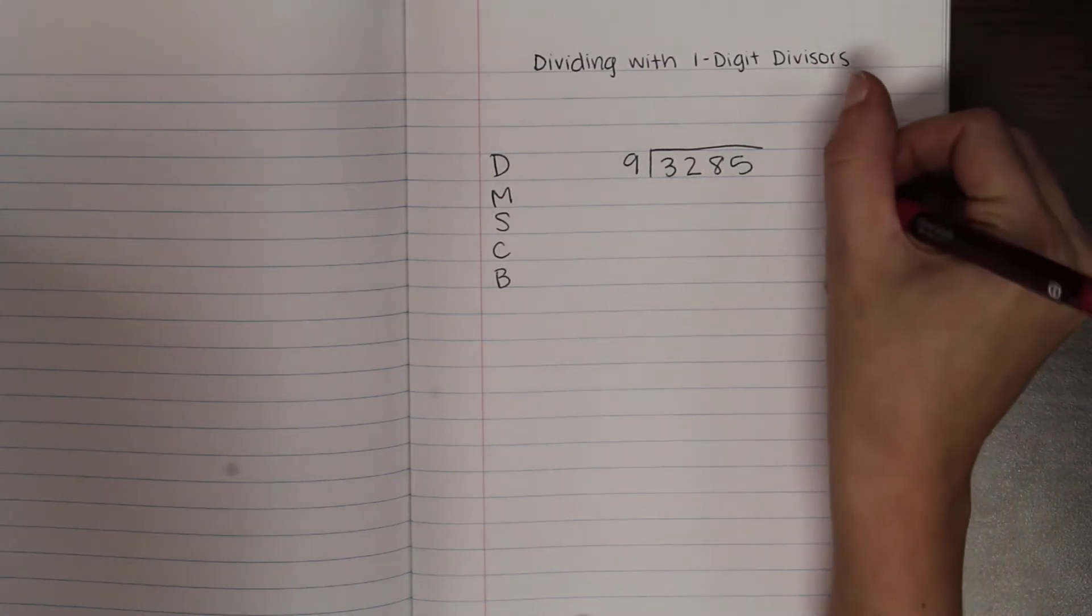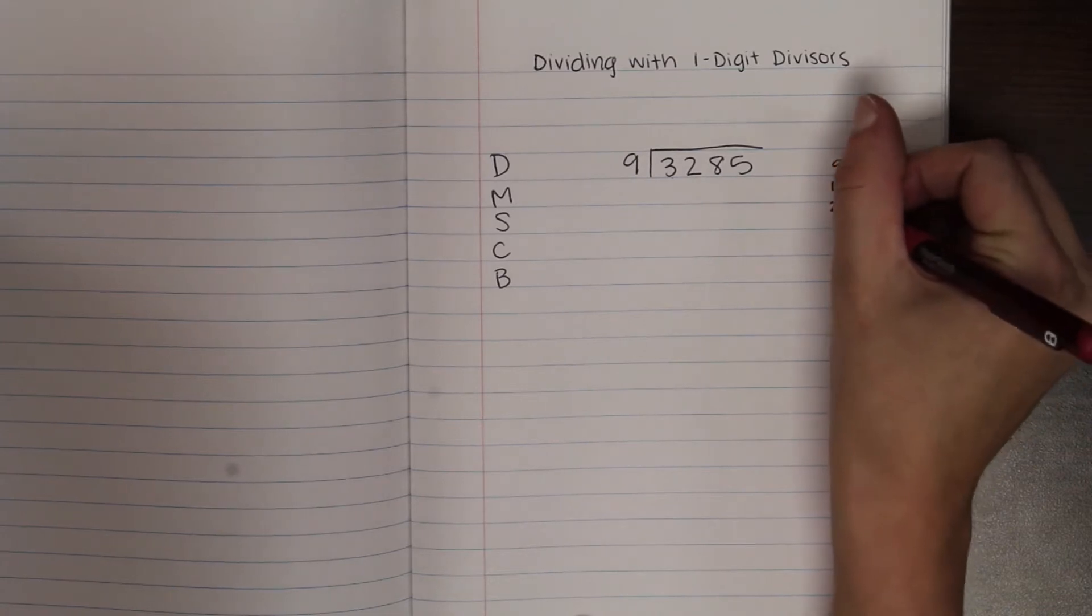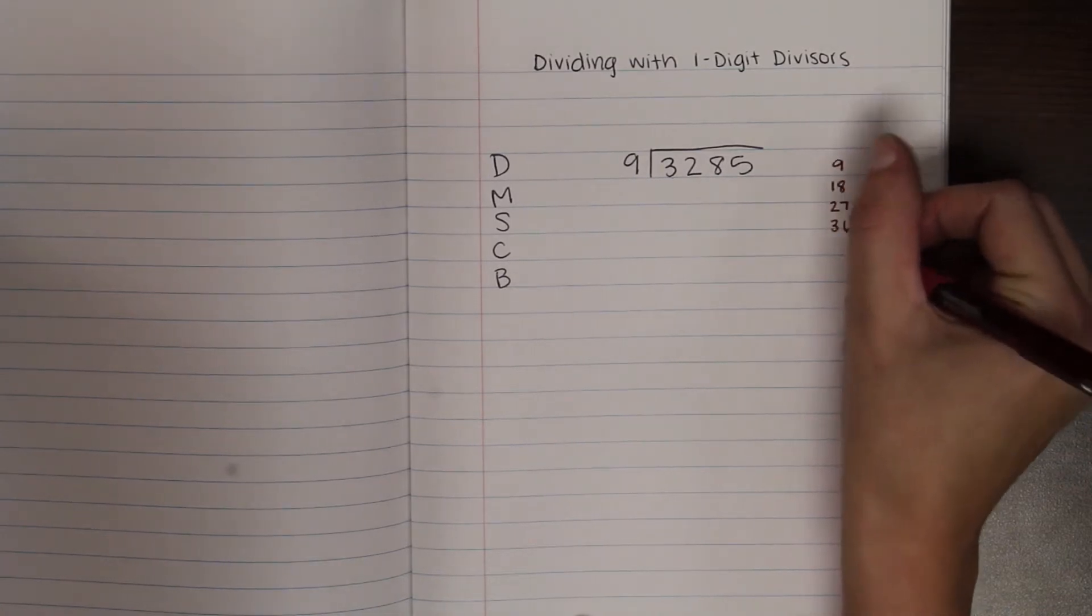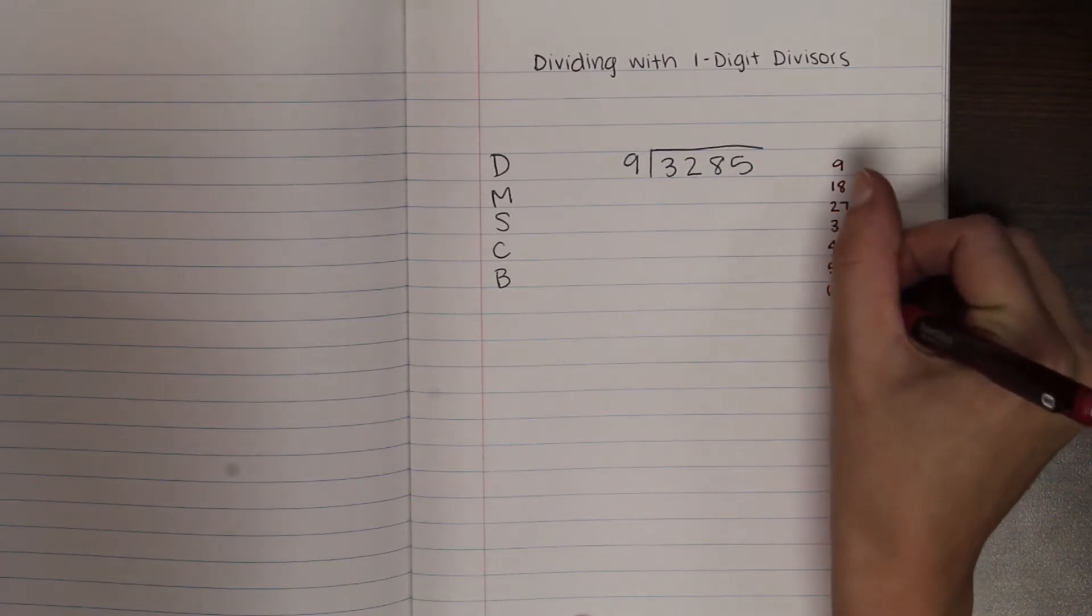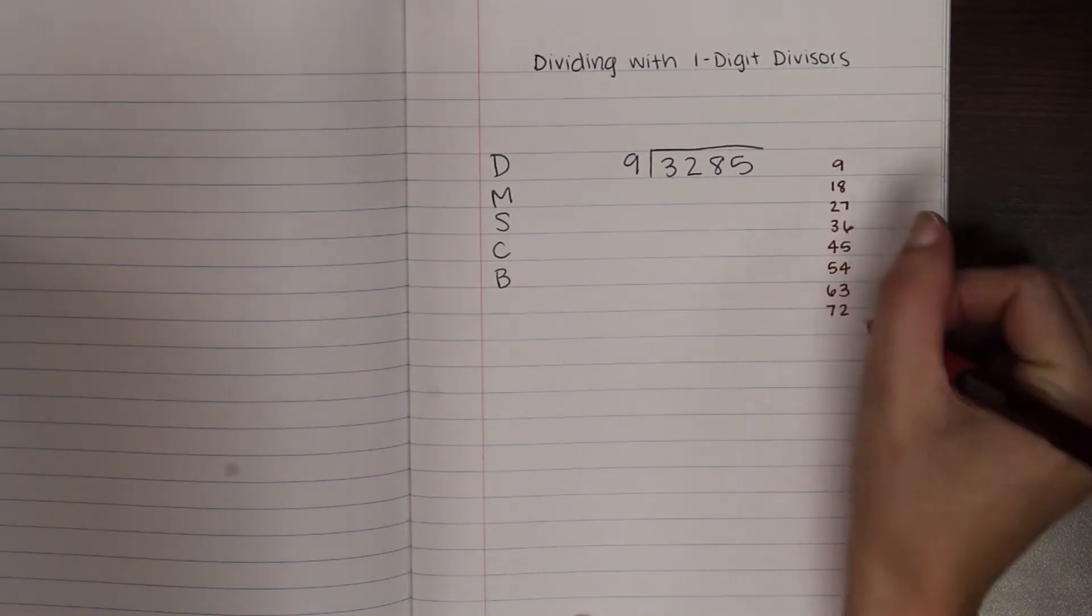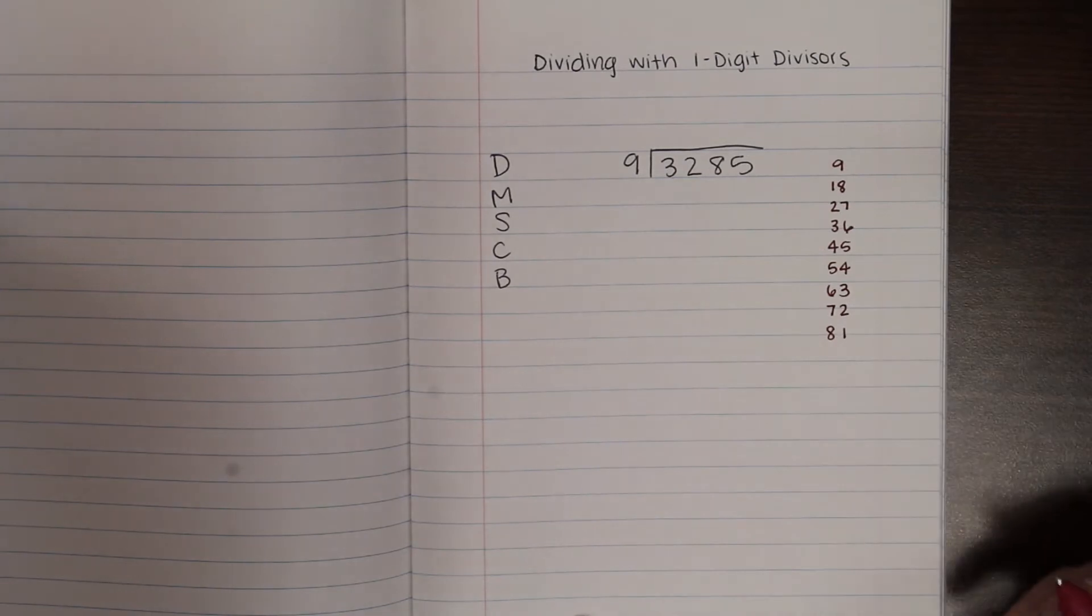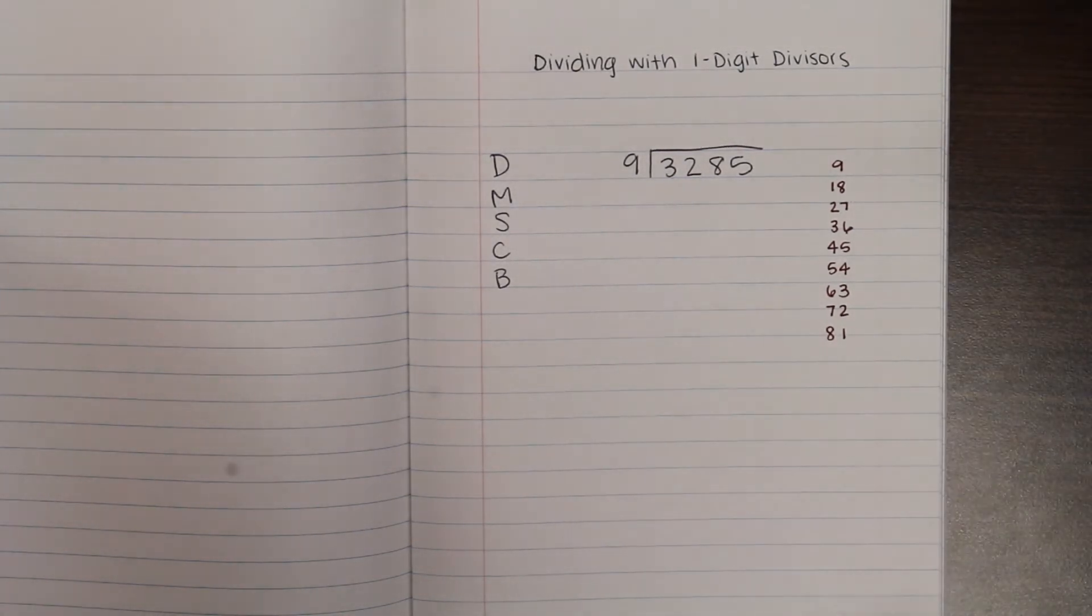I'm going to list it only up to 9 because I'm not going to need to go past that. So I'll say 9 plus 9 more is 18, 27, 36, 45, 54, 63, 72, 81. And there's really no sense in going to 10 because I'm only going to be dividing with one digits.